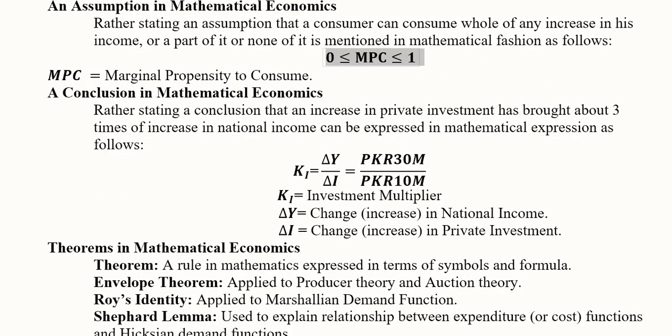Another conclusion we can get—primarily we understood the assumption, now we are getting the conclusion—is the multiplier under Keynesian macroeconomic theory. The investment multiplier, expressed as Ki, is the ratio of change in national income divided by change in investment. That answer tells us about the investment multiplier, the conclusion that we have drawn.